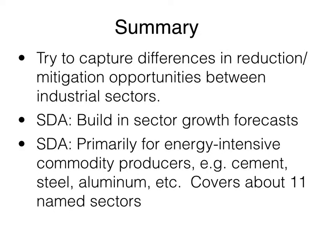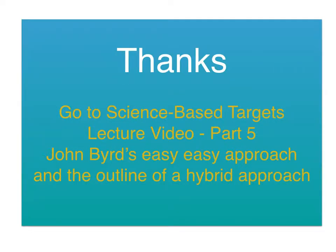So a brief summary: we're trying to capture differences in reduction and mitigation opportunities between sectors, and we're trying to figure out a way to allow for growth in some sectors. These sector-based models are a first step, but so far they're limited and have some quirks that may be difficult to overcome. I'm not sold yet — I think we can use them, but with care, and we still need a definitive approach to setting science-based targets. Thanks, and next we go to the last part of the lecture: John Bird's easy approach to getting a certified science-based target, and an outline of a hybrid approach I've been mulling over. See you in the next lecture.